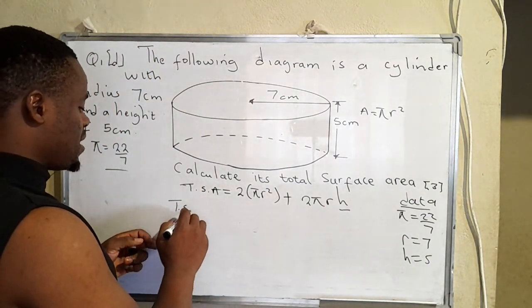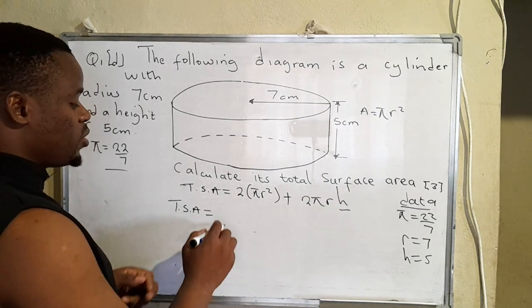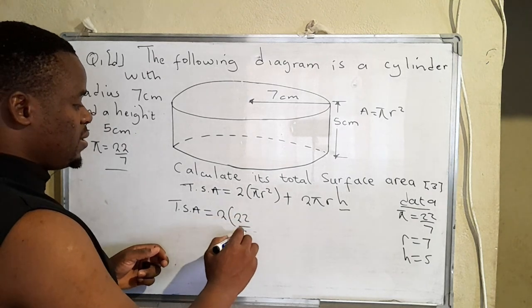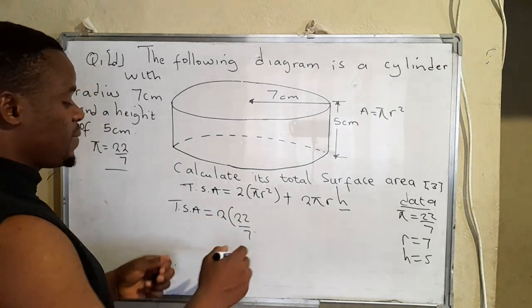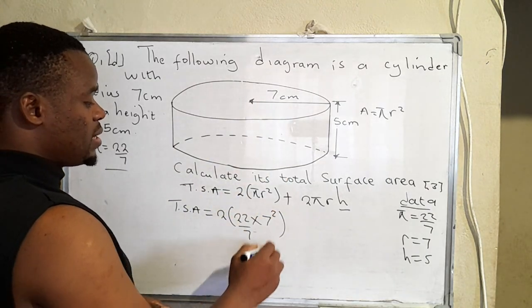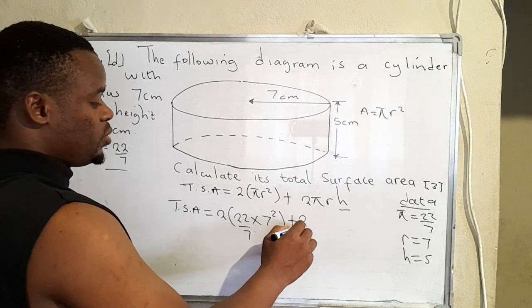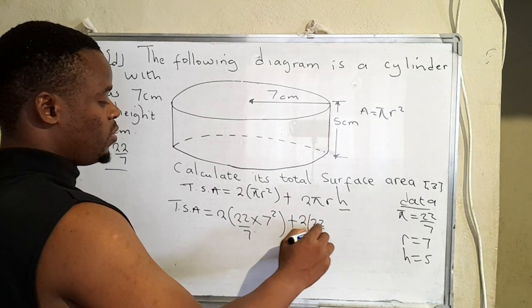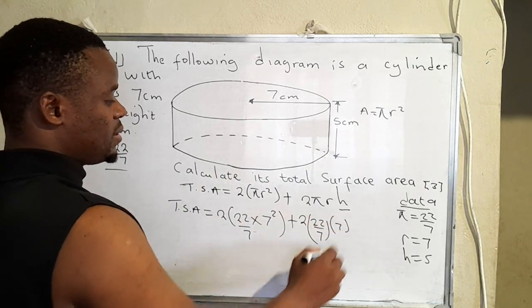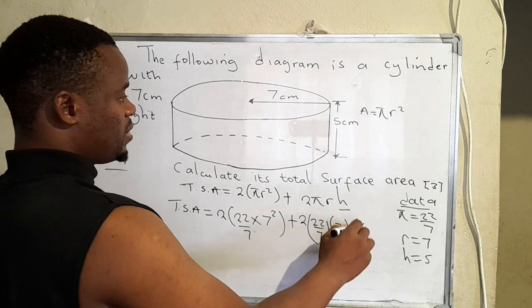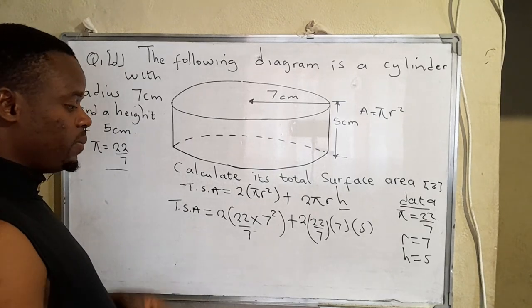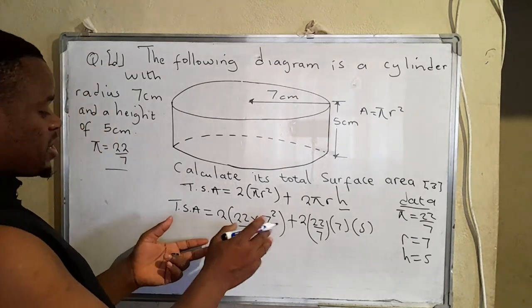So now we can say total surface area is equal to 2, then pi is 22 over 7, 22 over 7 times the radius, this is 7 squared plus 2 times 22 over 7 times radius which is 7 times height which is actually 5. Okay so we can actually execute everything now.